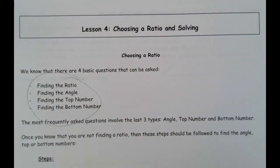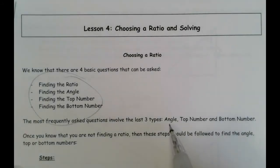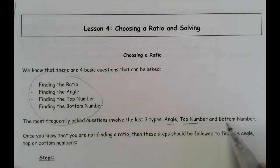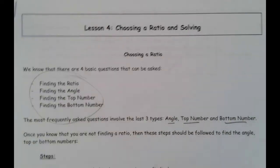Most frequently, the things you're going to get asked to do are going to be to find the angle, the numerator, or the denominator. And so once you know that you're not finding a ratio, then it's pretty much easy to do.